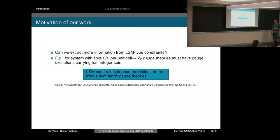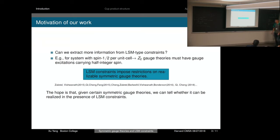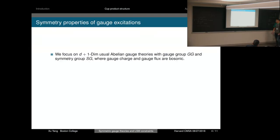So the answer to our question is yes. LSM constraints indeed impose restrictions on realizable symmetric gauge theories. The goal of our work is that given a certain symmetric gauge theory, we can tell whether it can be realized in the presence of LSM-type constraints. To that end, we need to first describe the symmetry properties of gauge theories.